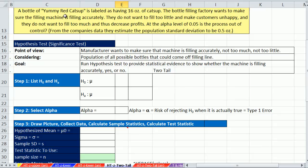So we have this yummy red ketchup. The label says 16 ounces. The bottle-filling factory wants to make sure the filling machine is filling accurately. They do not want to fill too little and make the customer unhappy, and they do not want to fill too much and thus decrease profits. At the alpha of 0.05, is the process out of control? Meaning, is the machine filling correctly? And we know the population standard deviation from past data. So always important to know your point of view. The point of view of this example here is manufacturers want to make sure that the machine is filling accurately. We're considering the population of all possible bottles that could come off the filling line. And our goal is to run a hypothesis test to provide statistical evidence to show whether the machine is filling accurately, yes or no.